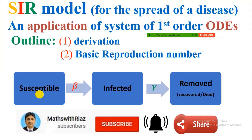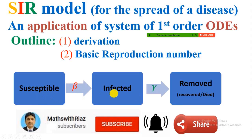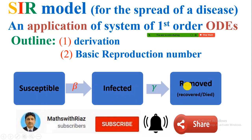SIR means Susceptible, Infected, and Removed. We divide the whole population into these three categories. For example, if an individual is in the susceptible category and upon interaction with an infected person, that individual becomes infected — moving from S to I — and after some period of time, due to recovery or death, the individual moves from Infected to the Removed category.